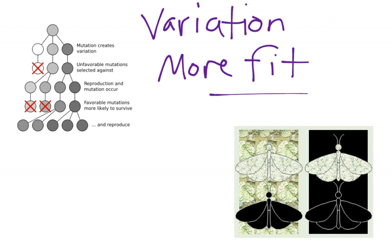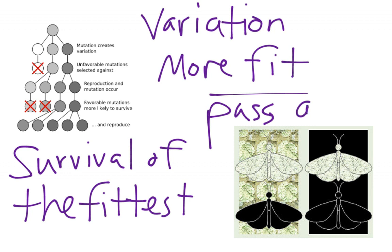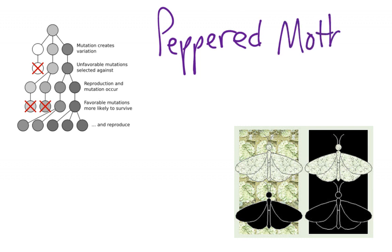This is where we get the language 'survival of the fittest.' What that simply means is that in any given situation, some organisms will be able to better survive, and therefore they will be able to pass on their genes — their DNA — to the next generation. A good example, a classic example, is what we call the peppered moths. In recent years the validity of this particular model has been questioned by some people, but it still represents a very good thought process for understanding the idea of natural selection.